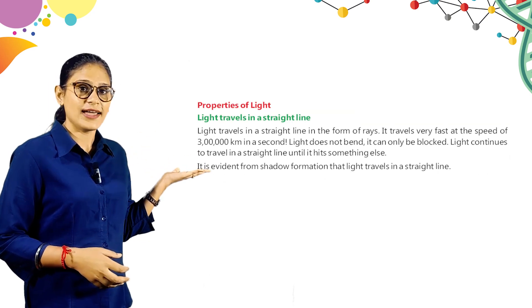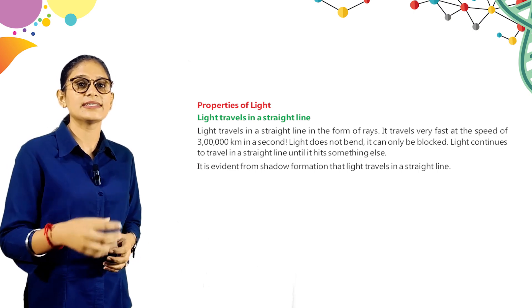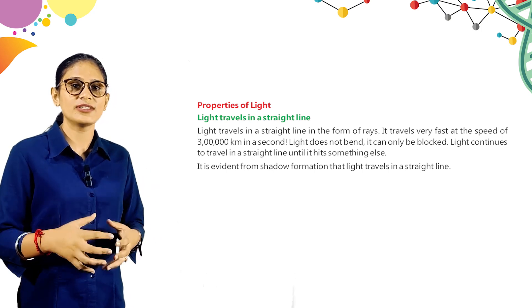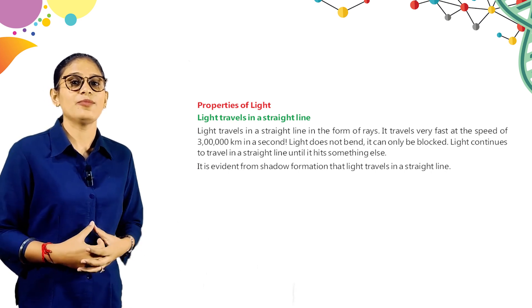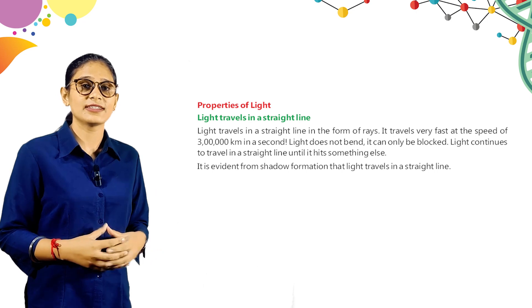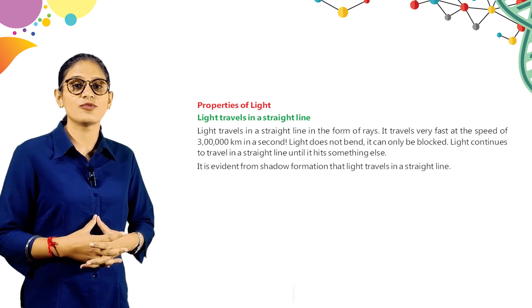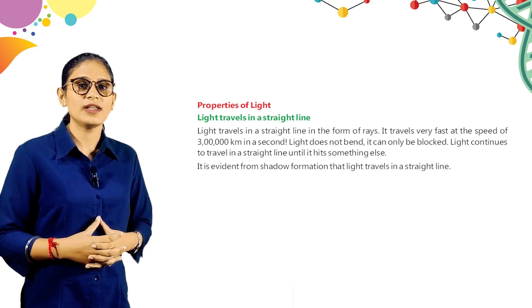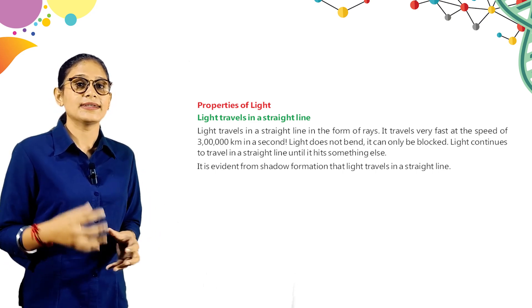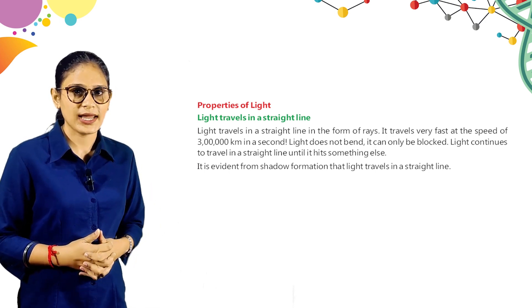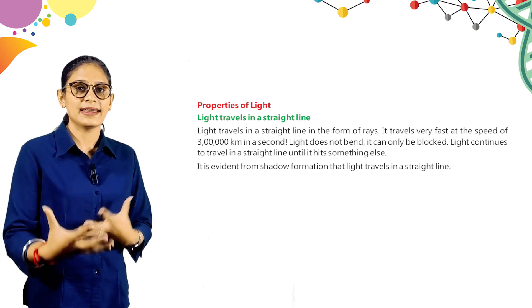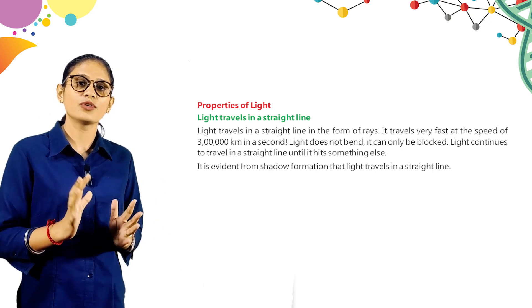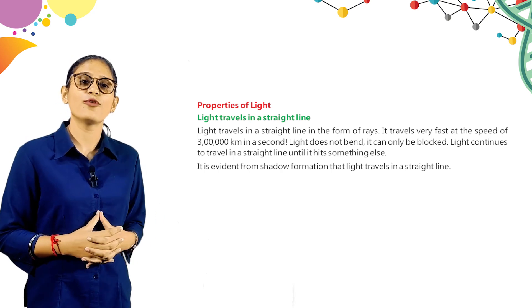Here are properties of light. Light travels in a straight line in the form of rays. It travels very fast at the speed of 3 lakh km per second. Light does not bend — it can only be blocked. Light continues to travel in a straight line until it hits something else. It is evident from shadow formation that light travels in a straight line. Light never bends — it flows in a straight line, and only when an object comes in its way does it get blocked.